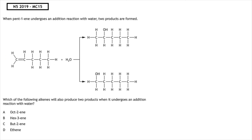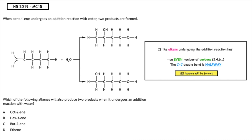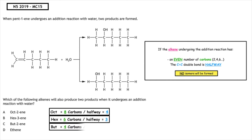This past paper question is from the National 5, 2019, multiple choice 15: When pent-1-ene undergoes an addition reaction with water, two products are formed. Which of the following alkenes will also produce two products when it undergoes an addition reaction with water? If the alkene has an even number of carbons and the double bond is halfway between them, no isomers will be formed. Oct has 8 carbons, and if it were to form no isomers the double bond would have to be in position 4, but it's not — so it will form isomers. Hex is 6, halfway is 3; but is 4, halfway is 2; eth is 2 and can only be in position 1. So B, C and D will not form isomers, which means A is the correct answer.